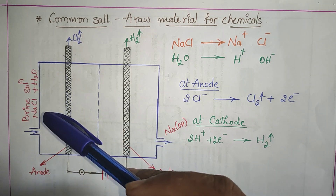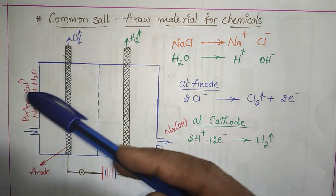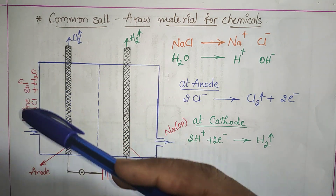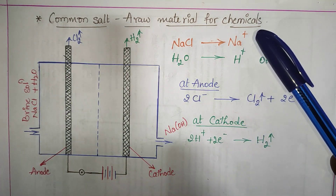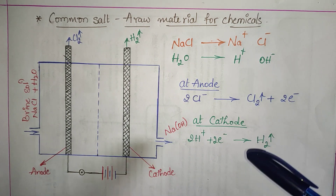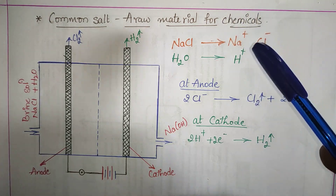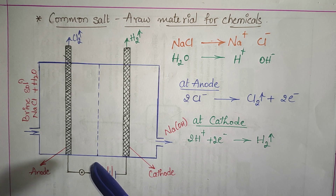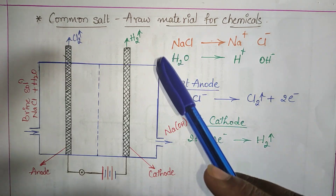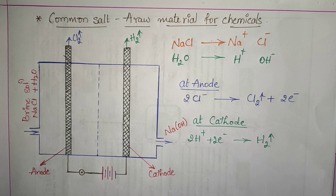Brine solution is nothing but a mixture of sodium chloride (common salt) with water. When sodium chloride is mixed with water it splits into its ions — sodium ion and chloride ion. When electricity is passed, not only NaCl but water also splits into H⁺ and OH⁻ ions.